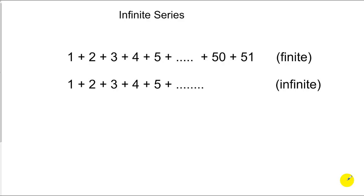We talked last time about arithmetic and geometric series, but we talked about series that had finite means to them, in other words, they ended. You'll see below I have two series, the numbers 1 through 51 and adding those up. We call that finite because it ends.